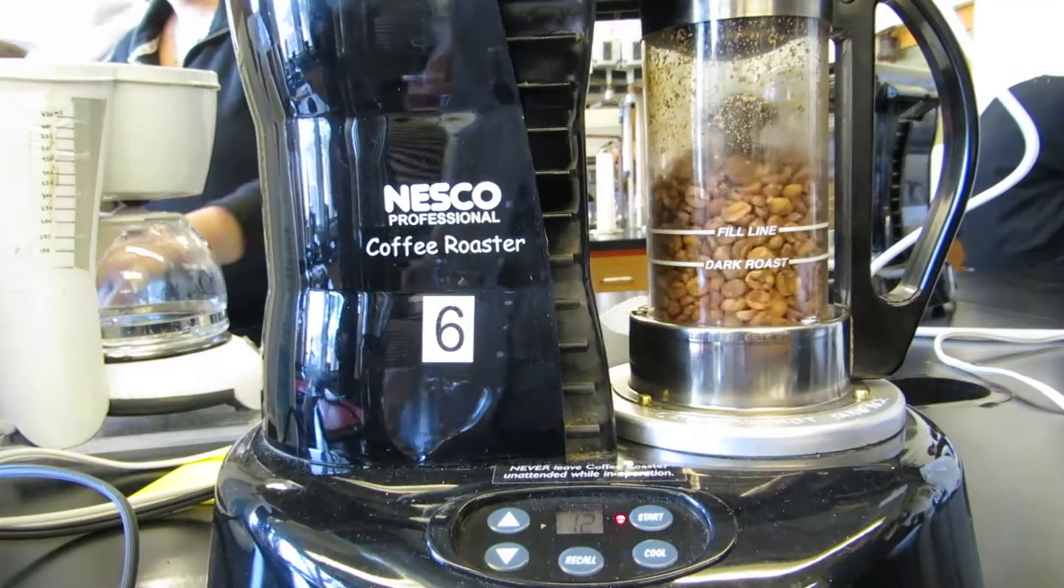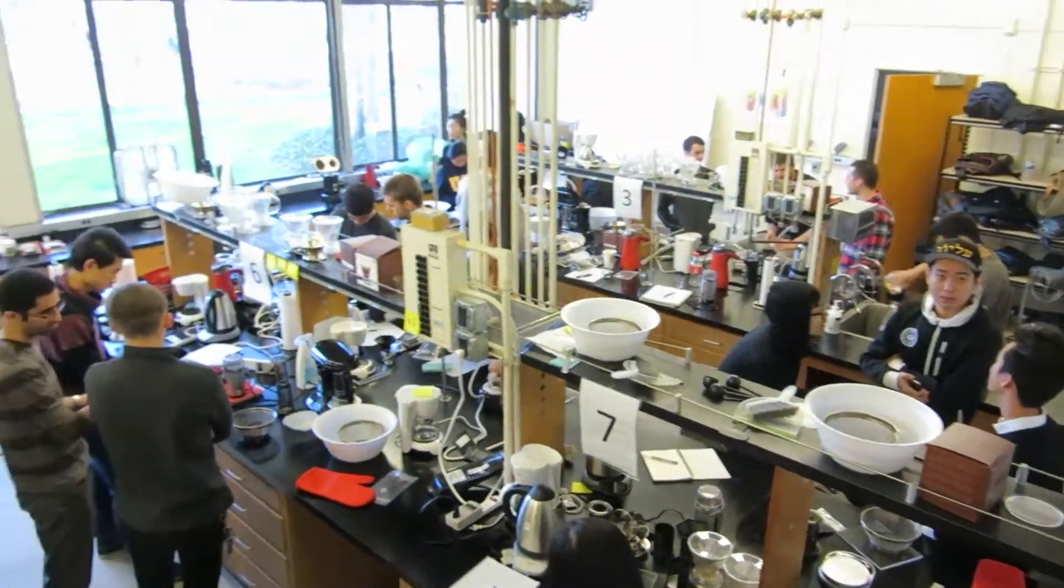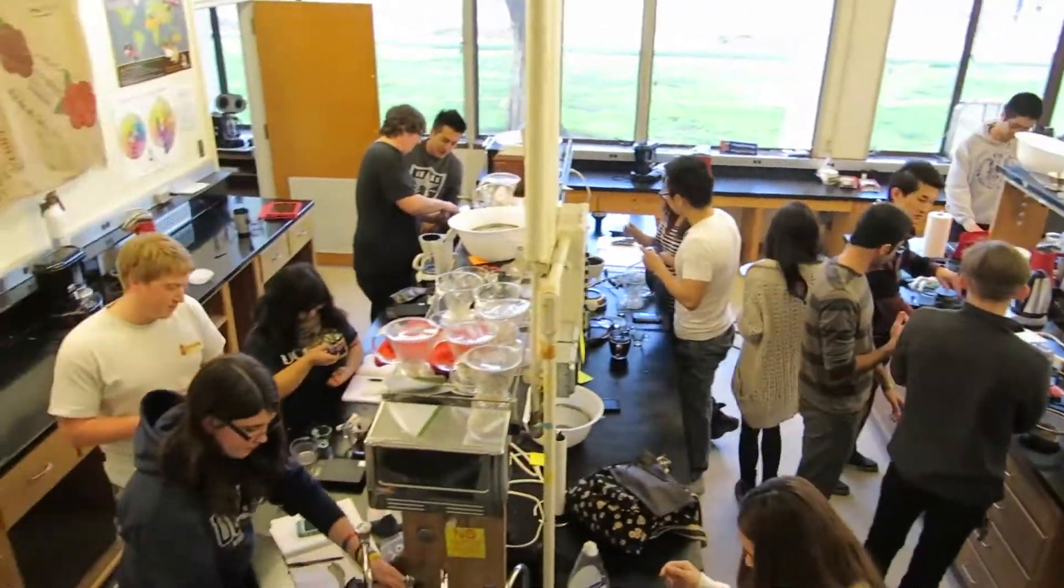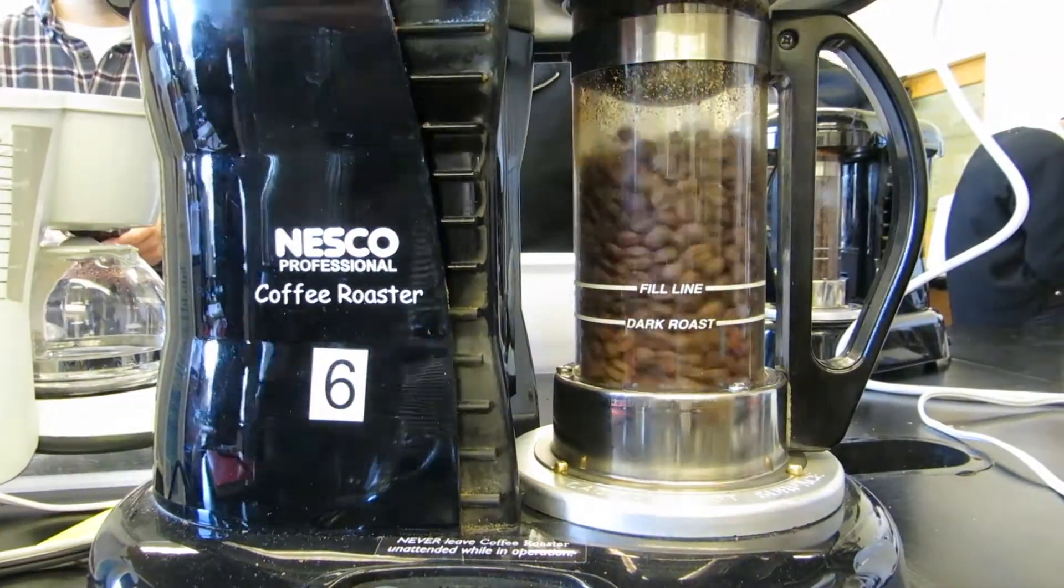The total mass of the roasted beans ended up being 135.4 grams, and it ended up using 0.23 kilowatt hours of energy.